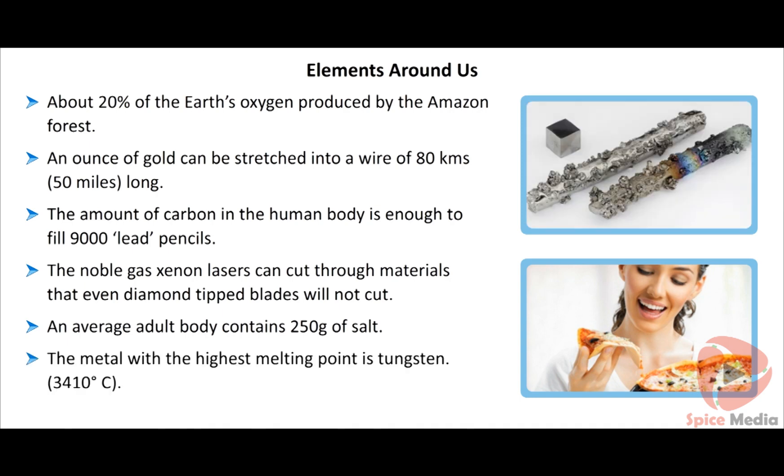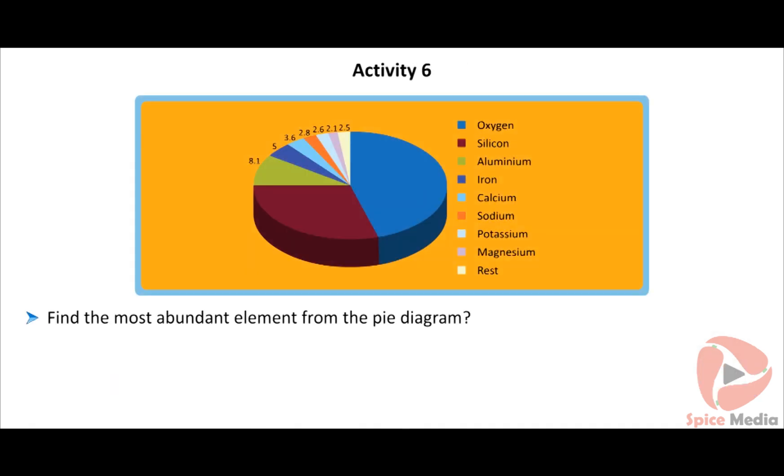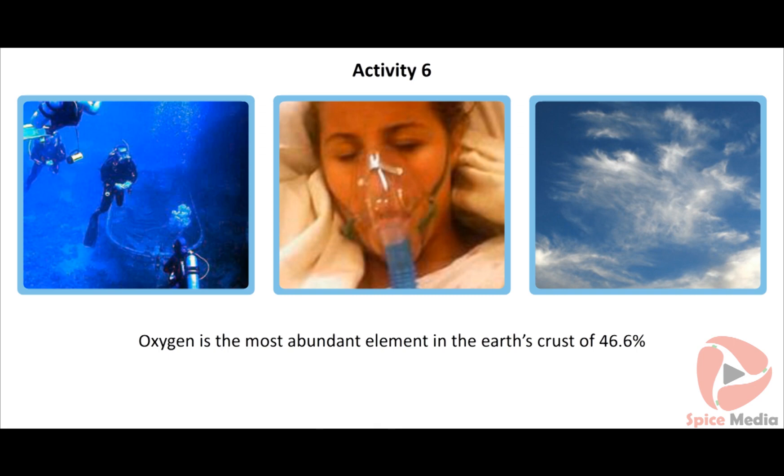Find the most abundant element from the pie diagram. Oxygen is the most abundant element in the Earth's crust of 46.6%.